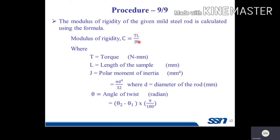We already know T, theta, L, and J values. J is equal to pi d to the power 4 divided by 32, which is the polar moment of inertia, where d is the diameter of the steel rod. L is already measured. While substituting, convert theta to radians: theta two minus theta one, multiplied by pi by 180. Then you can find the value of the modulus of rigidity C.